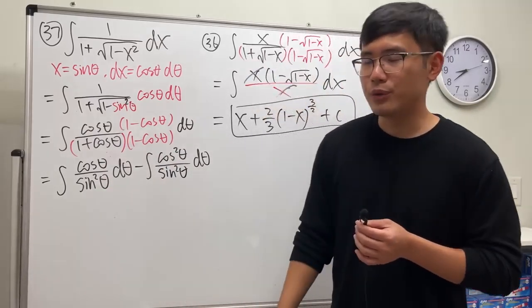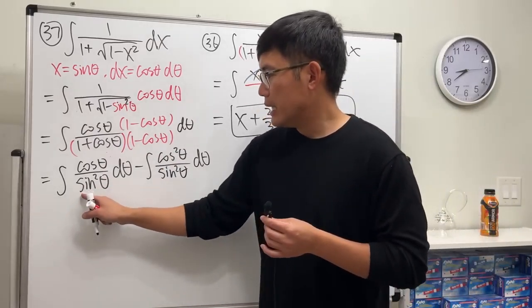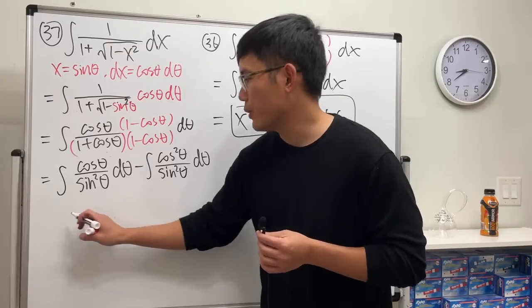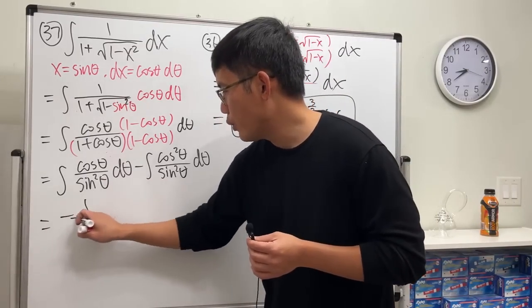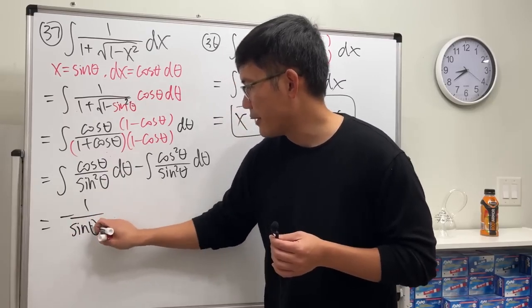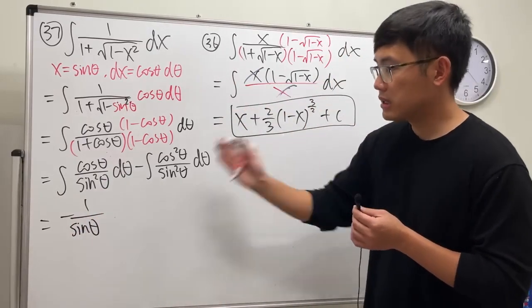We can do a u-sub. Let's do our u-sub in our head. u equals sine theta, so in this case we get negative one over u, which is negative one over sine theta, and then we are done.